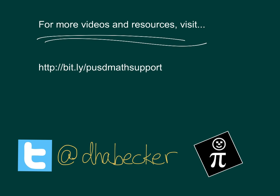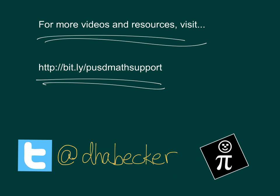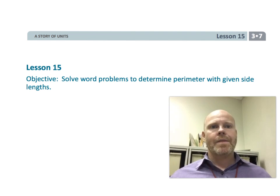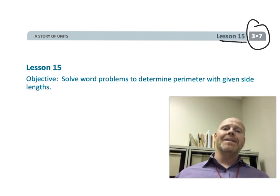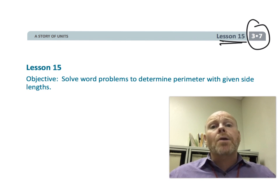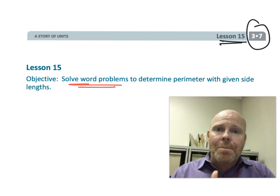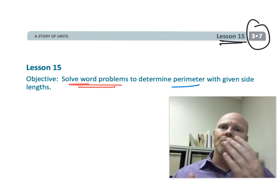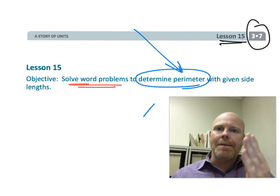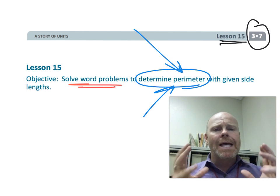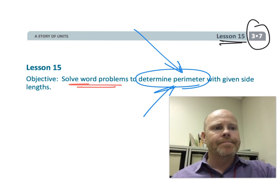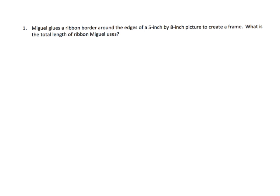This is third grade module 7 lesson 15. In this lesson, students are going to be solving word problems, and we're going to use those word problems to help students really nail down the meaning of perimeter and vocabulary words. So let's get started.